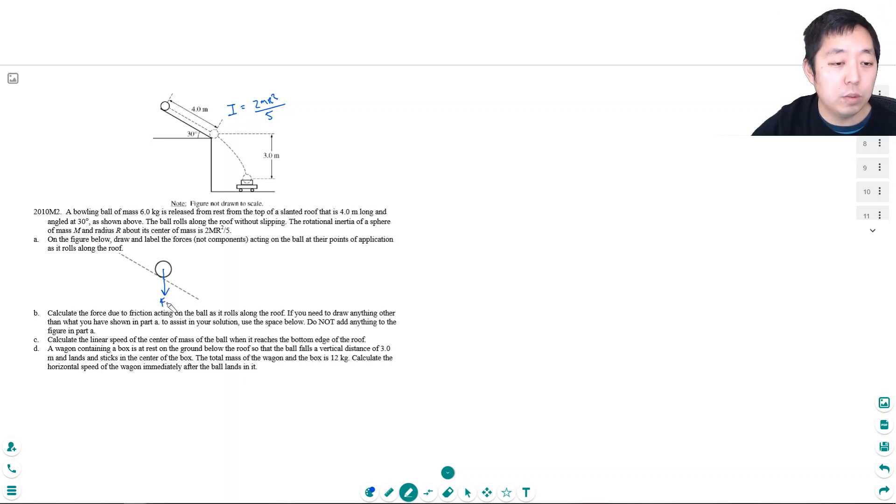But now, when you do the free body diagrams, it's important to know where you're putting the points, because that will be very important for the torque calculations. So, we're going to do that force there. At this point, at the bottom, I have this force like this, the normal force. Now, the normal force acts at the bottom, like where the ramp is touching the ball.